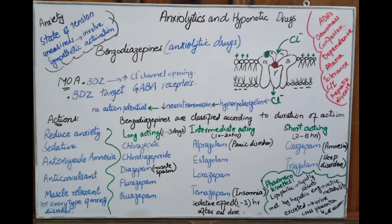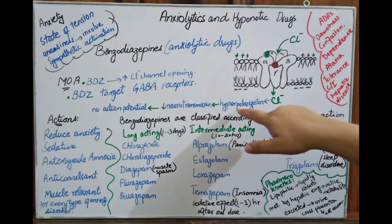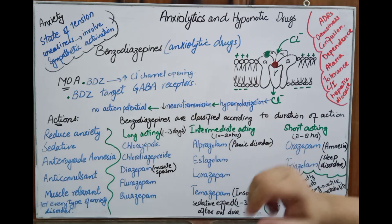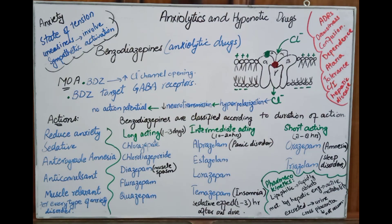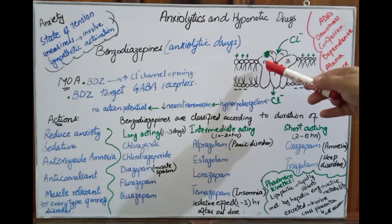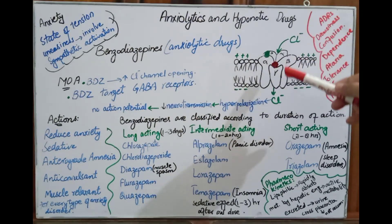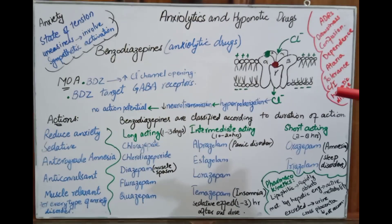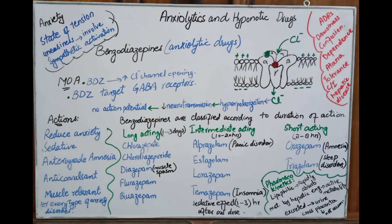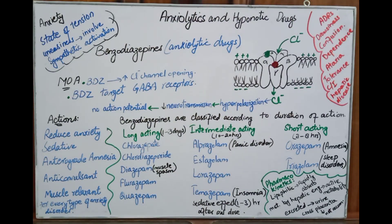Benzodiazepines potentiate the effect of GABA — they do not inhibit it. When GABA binds, there is opening of the chloride channel, causing hyperpolarization, decreased neurotransmission, and no action potential. When benzodiazepines bind, they increase the effect of GABA, causing increased chloride influx due to longer opening of the chloride channel, resulting in prolonged hyperpolarization and no action potential.